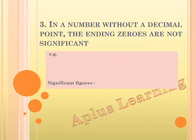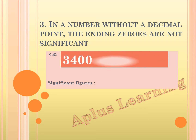The next rule: in a number without a decimal point, the ending zeros are not significant. Let's take the number 3,400. This is a number without a decimal point, so the zeros at the end are to be discarded. The significant figure here is 2.